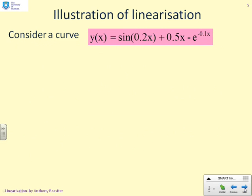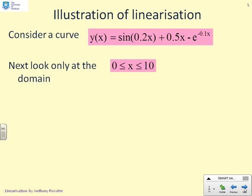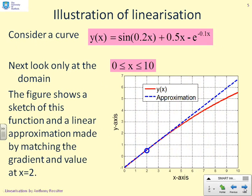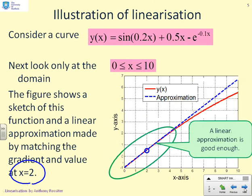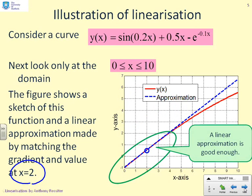So first, an example. Here's a curve that looks a bit nasty — it's got a sine term and an exponential term, and you'd say yeah, that's clearly nonlinear. Now let's focus on a particular domain, x between 0 and 10, and sketch that curve — there it is, the red curve. But what is fairly clear is that if you stay in the region of x equals 2, the curve is pretty close to a straight line. Therefore, if you stay in that region, a linear approximation will be good enough.